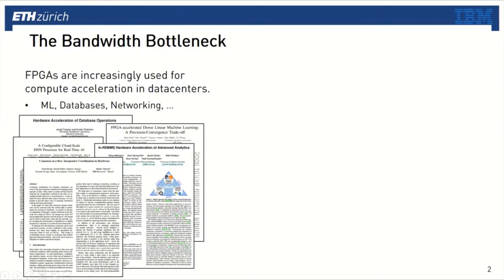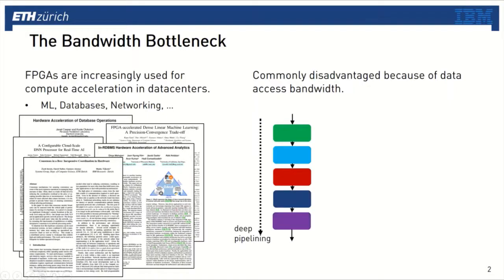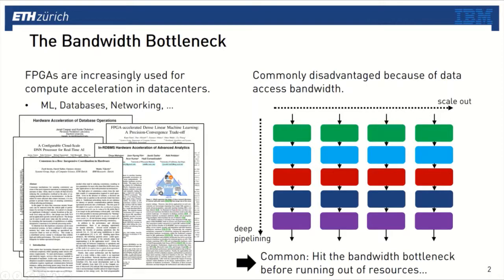Since we have started using FPGAs for compute acceleration, it has become evident that for many applications, FPGAs are at a significant disadvantage compared to other processors. More often than not, the main disadvantage is the limited bandwidth when accessing data. On FPGAs, we usually design accelerators to be very deep pipelines, then replicate those pipelines to increase data consumption rate. We usually have enough resources to reach a parallelism where the consumption rate becomes larger than the available bandwidth, so the system bottleneck becomes the bandwidth.